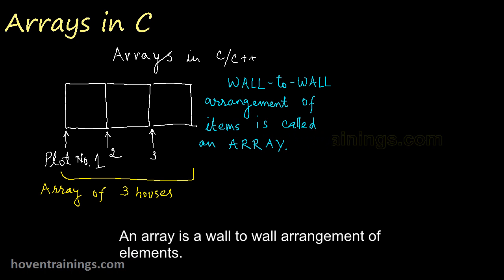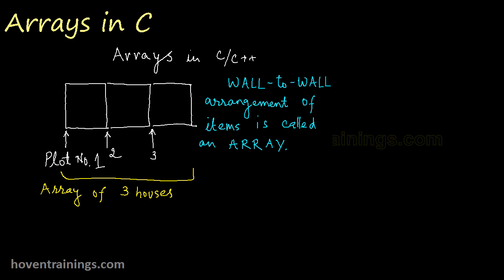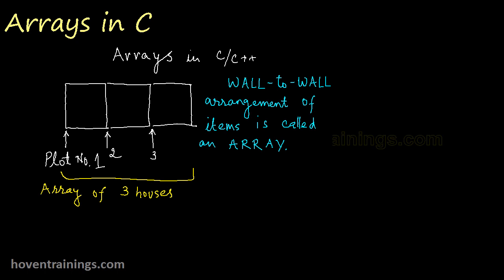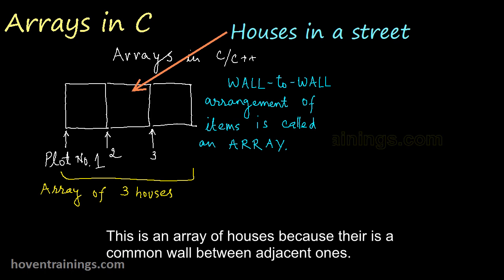An array is a wall-to-wall arrangement of elements where two adjacent elements share a common wall. This is an array of houses because there is a common wall between adjacent ones.